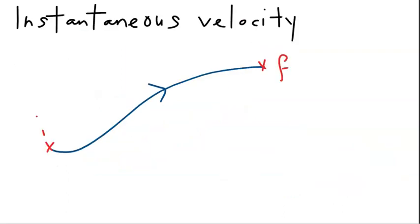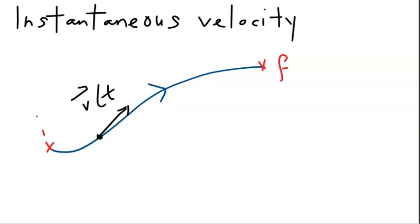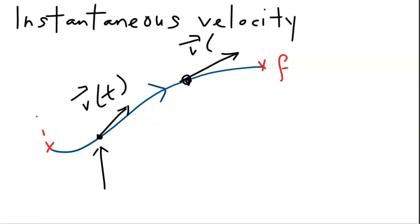On the other hand, instantaneous velocity is the velocity at a particular time. If the particle is at a given point, the velocity will be pointing in that direction, denoted at time t when the object is at that point. Likewise, when the object gets to another point, the velocity will be heading that way — that is the instantaneous velocity at the time when the object reaches that point, and so on and so forth.